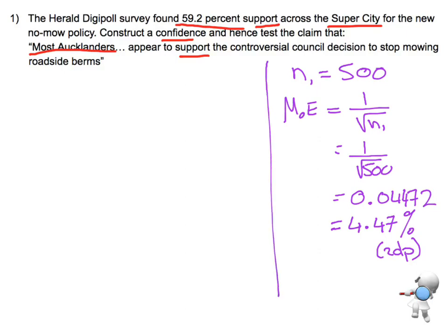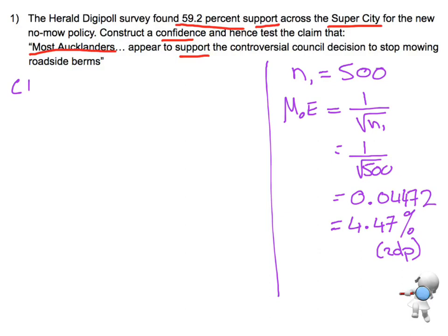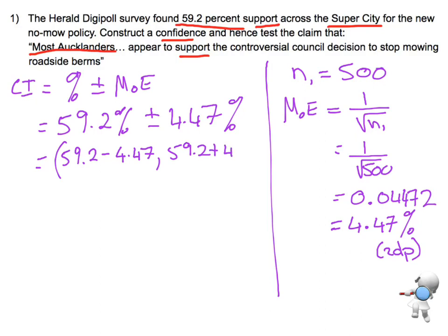Now that I've got my margin of error, the next part is to do the confidence interval. It's that percentage plus or minus the margin of error. So CI equals the percentage plus or minus the margin of error. In this case, our percentage is 59.2%, plus or minus our margin of error of 4.47%. I'm going to split that into two calculations: 59.2 minus 4.47, and 59.2 plus 4.47.